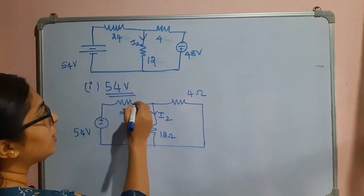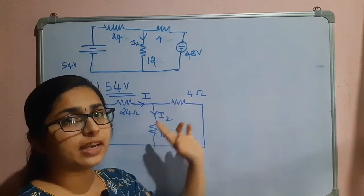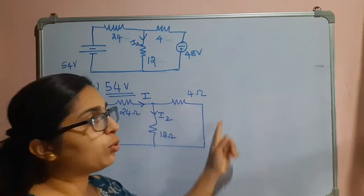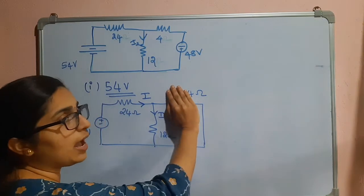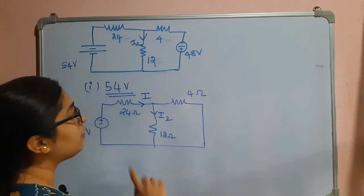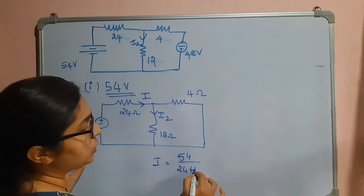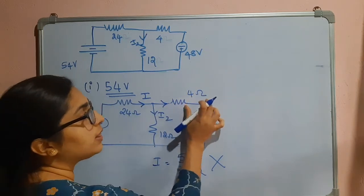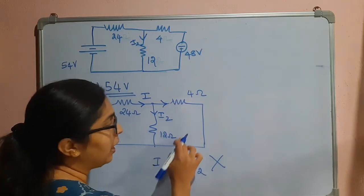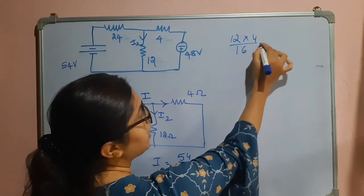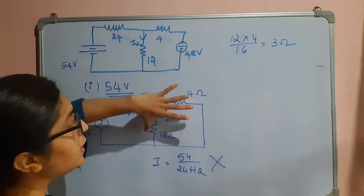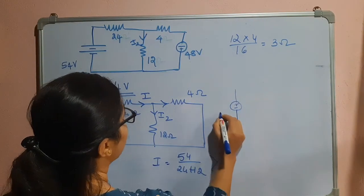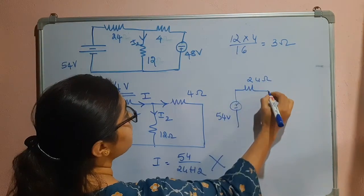We can use the current divider rule. If I consider the main current I, this is the current getting divided between these two branches. To find I, we have to take both resistors into consideration. Don't make the mistake of ignoring the 4 ohm resistor — many people find I = 54/(24+12), which gives a wrong answer. First, solve the parallel combination: 12×4/16 = 3 ohms. So the circuit becomes 54V, 24 ohms, and 3 ohms in series.